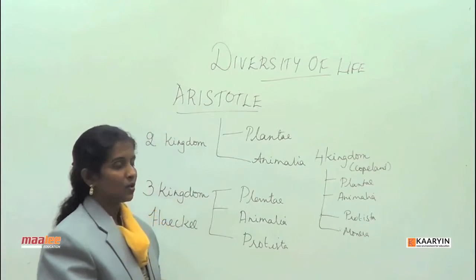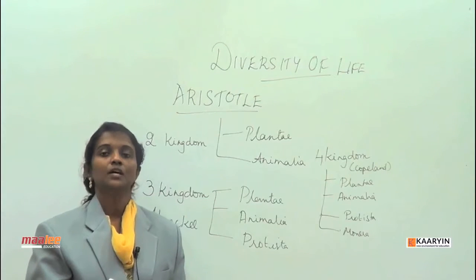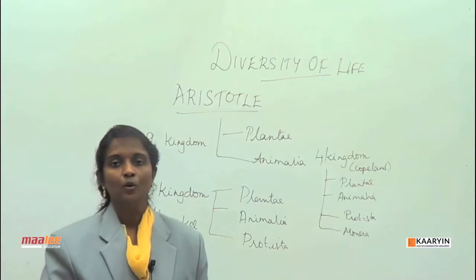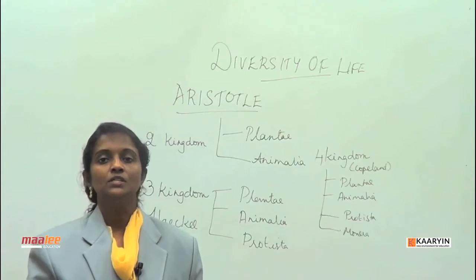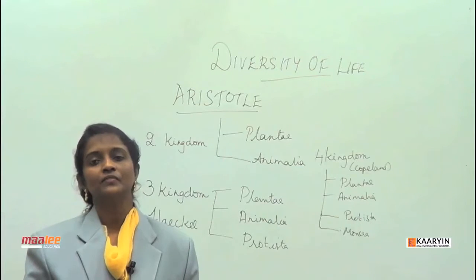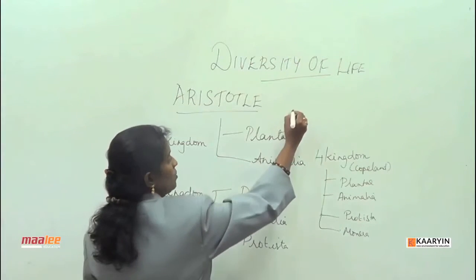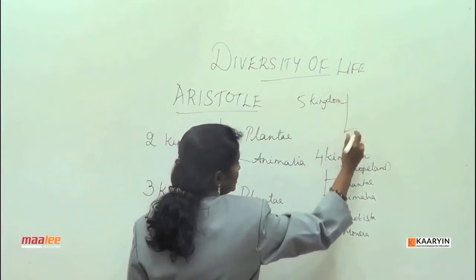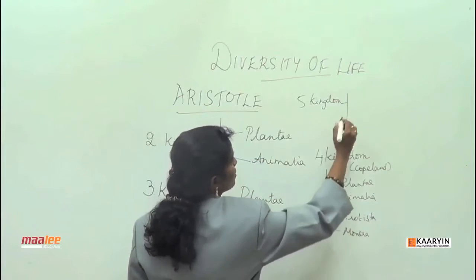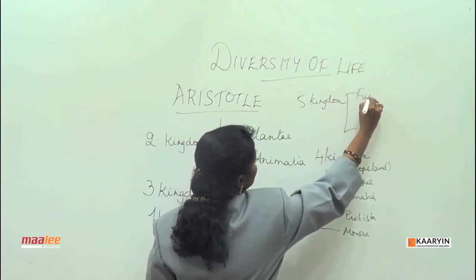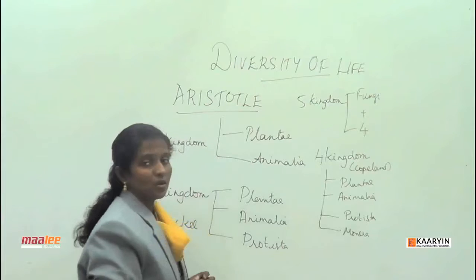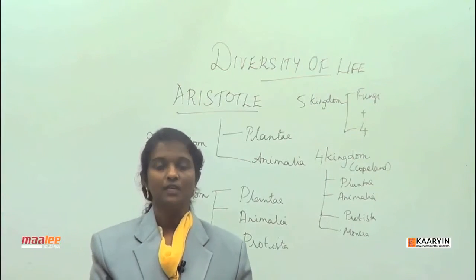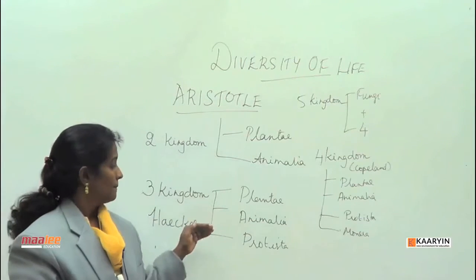Then we have the Five Kingdom Concept, which is widely acceptable in colonial countries — countries ruled by the British. We follow Robert H. Whittaker's Five Kingdom Concept. In this system, Whittaker took the four kingdoms we had been classifying and added Fungi as a fifth kingdom. So now we have five different kingdoms.